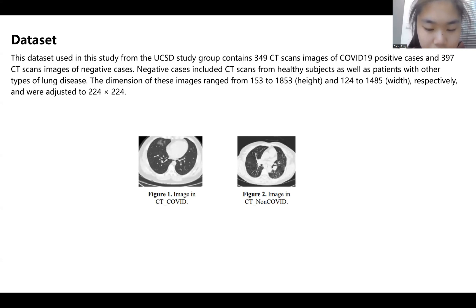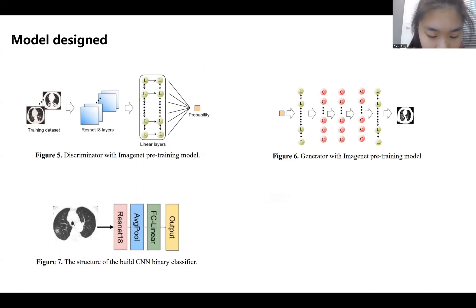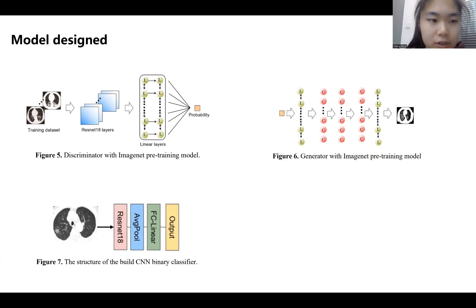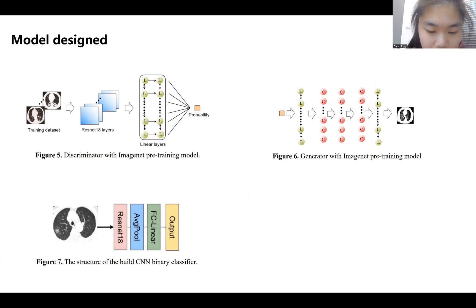The image dimensions ranged from 153 to 1853 in height and 124 to 1485 in width, and were adjusted to 224 by 224. These images were processed as grayscale images to avoid the interference of RGB color and to improve accuracy. The model I used is based on DC-GAN but with an improvement: introducing the ImageNet pre-training model.